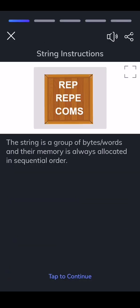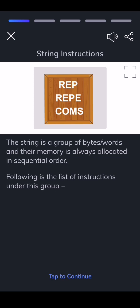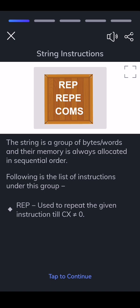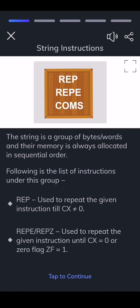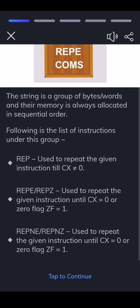A string is a group of bytes or words and their memory is always allocated in sequential order. Following is the list of instructions under this group. REP — used to repeat the given instruction till CX does not equal 0. REPE — used to repeat the given instruction until CX equals 0 or zero flag ZF equals 1. REPNE — used to repeat the given instruction until CX equals 0 or zero flag ZF equals 0.